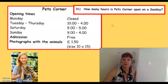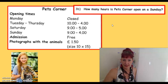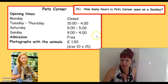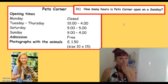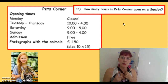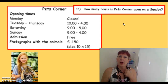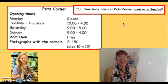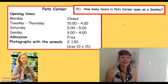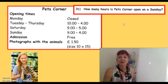Second question: How many hours is Pets Corner open on a Sunday? Let's have a look at Sunday. Sunday is open from 9 to 4. You do not start counting on the 9. At 9 o'clock on Sunday, how long has Pets Corner been open? It hasn't been open at all. It's not until you get to 10 o'clock that it's been open for an hour. So I'm going to start again.